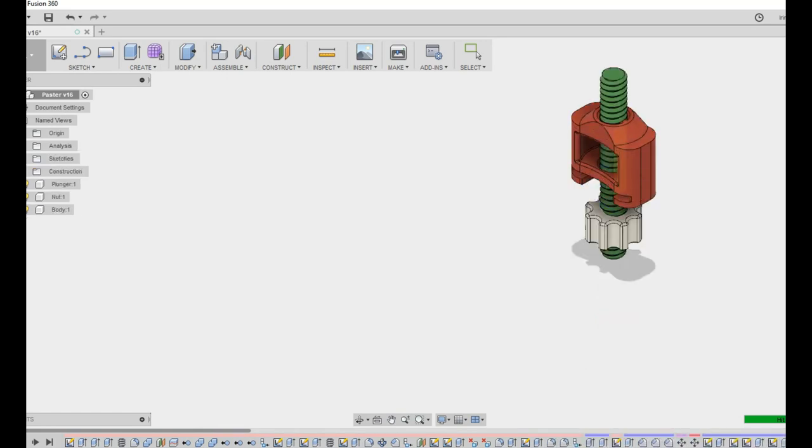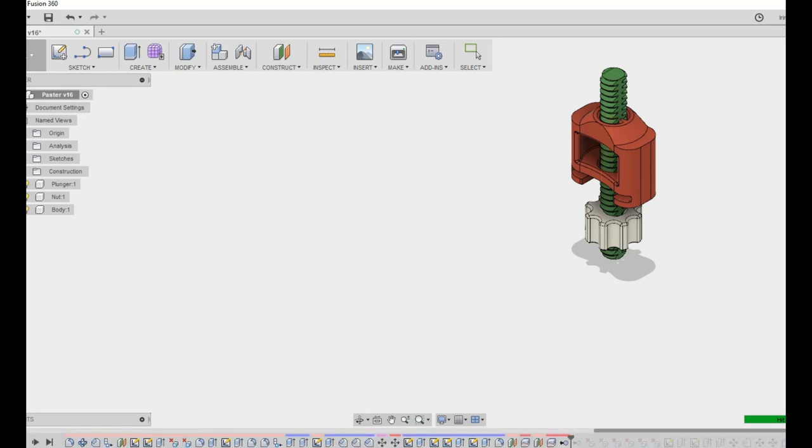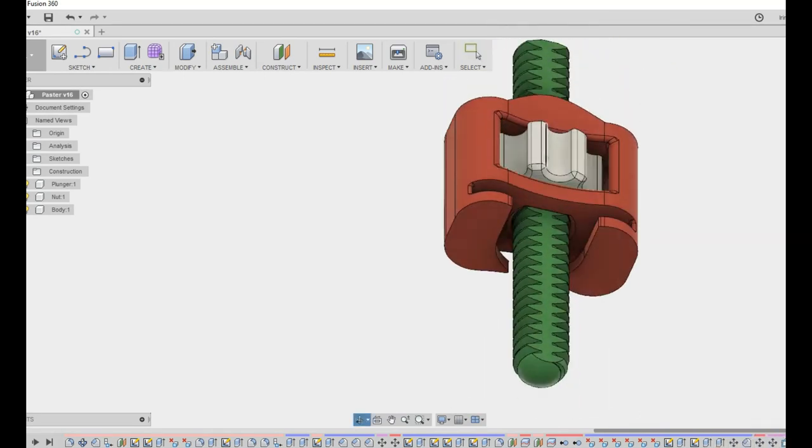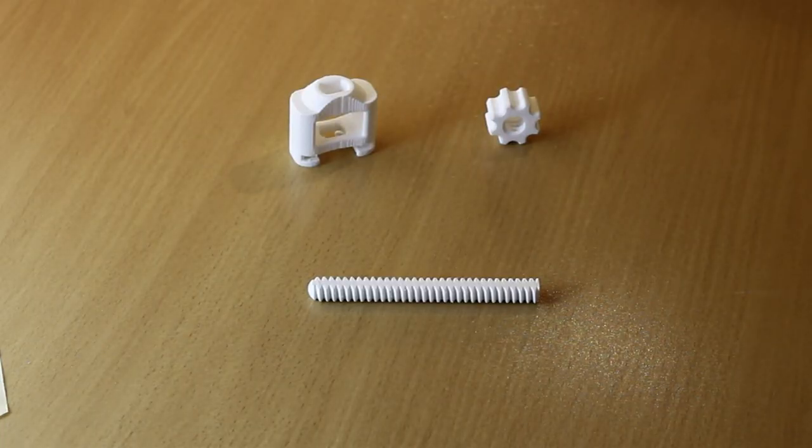And here I added two flat sides to the threaded plunger to stop it from rotating with the nut. And also, this has the added benefit of being easier to print flat. This is how it's supposed to look in the end. There you go.